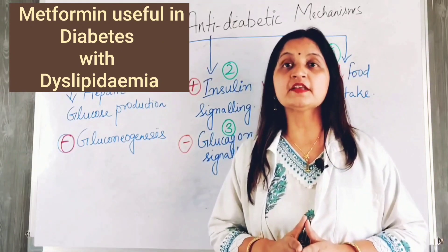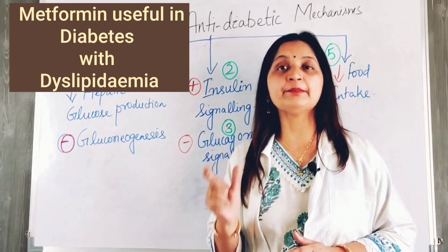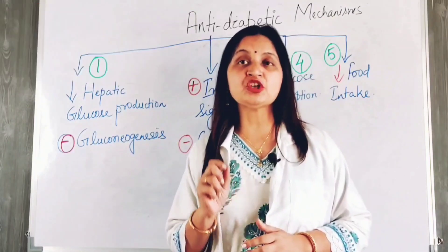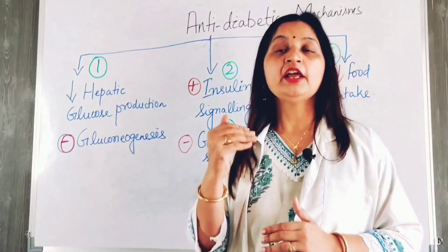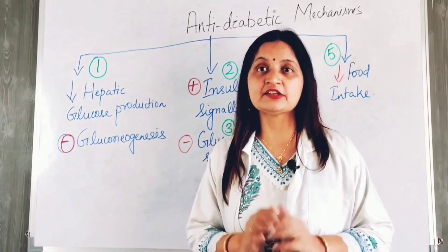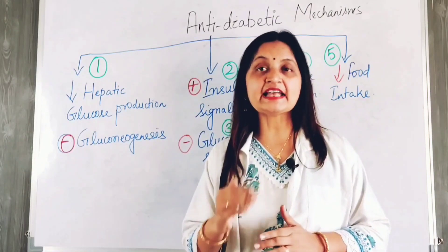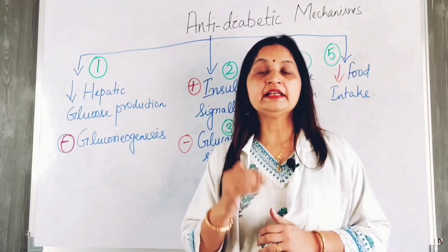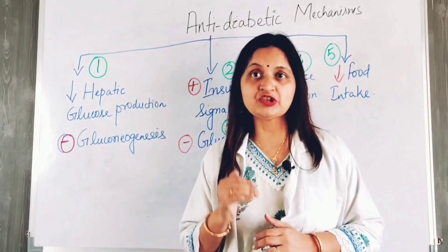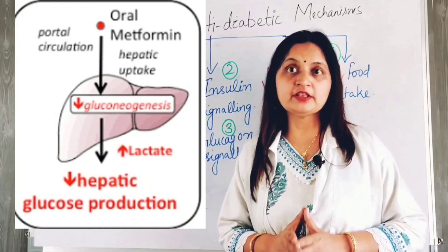In addition, metformin is a very useful drug for the treatment of diabetic patients with dyslipidemia. Metformin has a beneficial effect on the lipid profile — it reduces LDL and VLDL, and improves the protective lipoprotein HDL. It does so by increasing fatty acid oxidation in the liver, decreasing the release of free fatty acids into the circulation, and reducing lipid accumulation in the liver. This is an overview of the anti-diabetic actions of metformin.